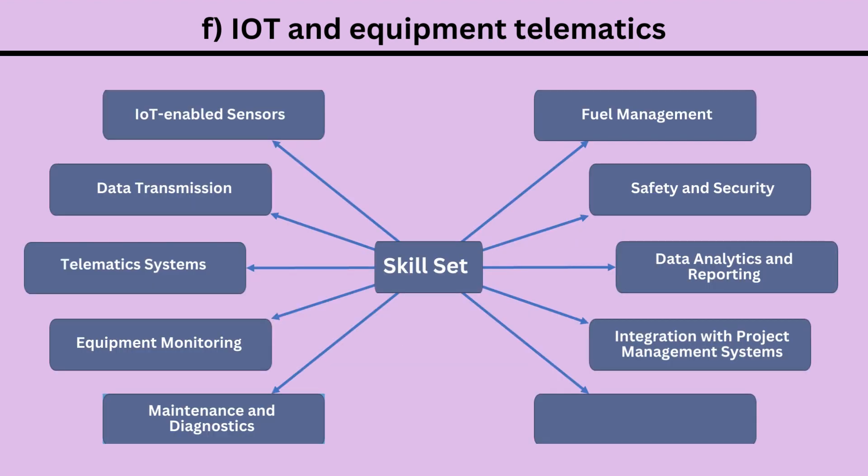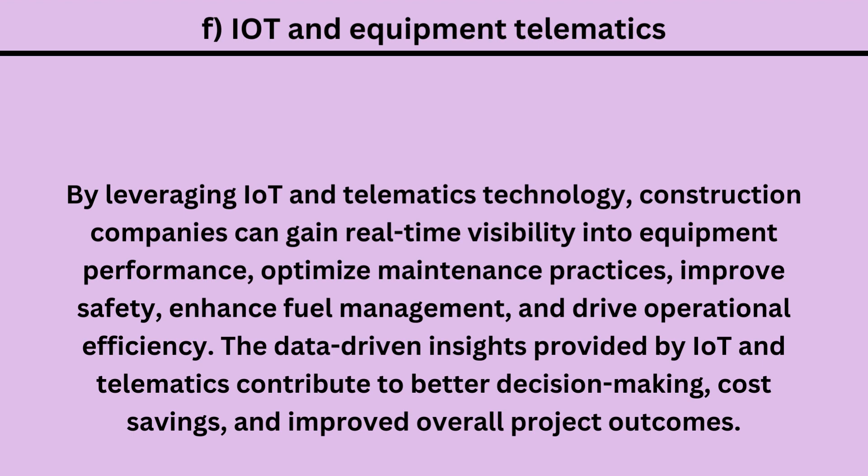1. IoT-enabled Sensors, 2. Data Transmission, 3. Telematics Systems, 4. Equipment Monitoring, 5. Maintenance and Diagnostics, 6. Fuel Management, 7. Safety and Security, 8. Data Analytics and Reporting, 9. Integration with Project Management Systems. By leveraging IoT and Telematics technology, construction companies can gain real-time visibility into equipment performance, optimize maintenance practices, improve safety, enhance fuel management, and drive operational efficiency. The data-driven insights provided by IoT and Telematics contribute to better decision-making, cost savings, and improved overall project outcomes.